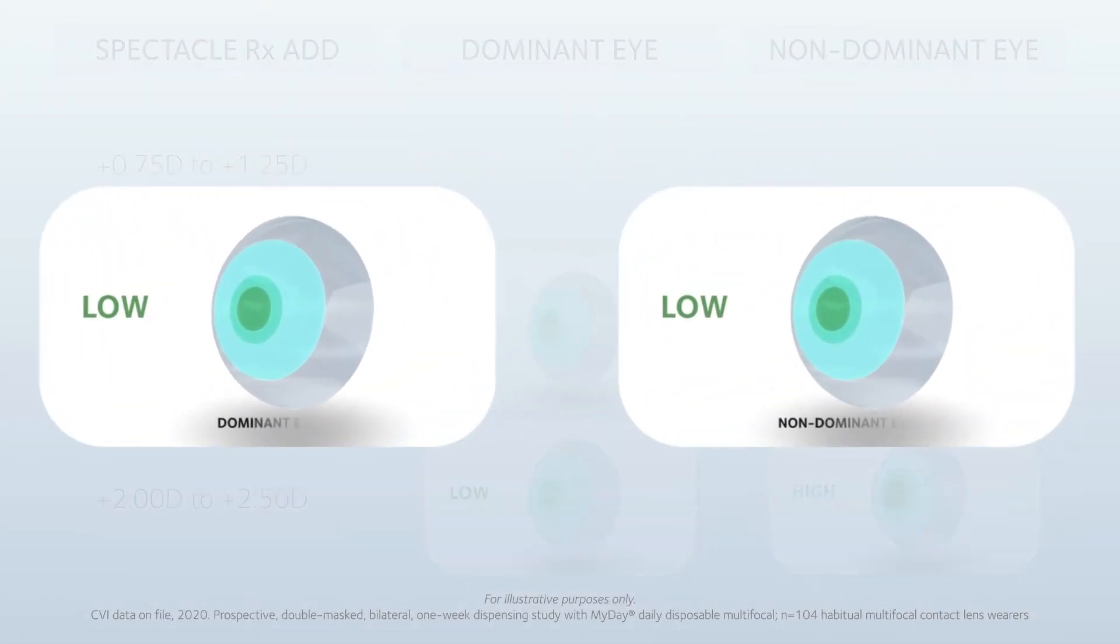For early presbyopes, the system combines two low-add aspheric centre-near designs with a wide distance area and optical progression into the reading area, ideal for maintaining clear distance vision when transitioning into multifocal contact lenses.